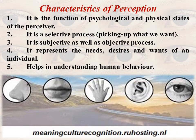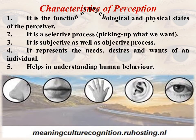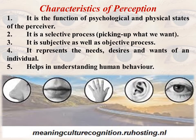We will start with the Characteristics of Perception — the meaning and definition were already discussed in the previous video. The first characteristic, as this animation is showing, is that perception is a function of the psychological and physical states of the perceiver. That means at the moment when we receive a stimulus — which may be of different shape, size, color, sound, or function — what is the psychological and physical state of the individual at that moment significantly influences the perception.